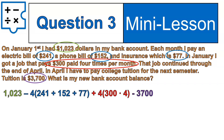Here's my full equation. I start with $1,023. I'm going to subtract out my bills: minus four times ($241 + $152 + $77), because it's the months of January, February, March, and April — four months. Those expenses happen every single month, so I multiply times four to make it simpler. Then in red: I get paid $300 times four per month, multiplied again times four because I have four months. And at the very end, I subtract $3,700 for college tuition.